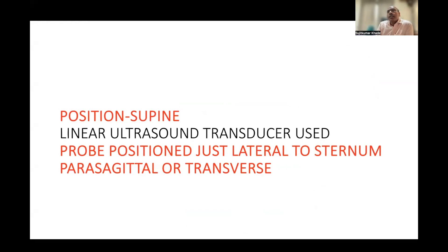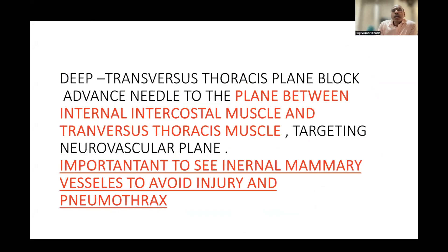Patient position is supine. A linear ultrasound transducer is used, positioned just lateral to the sternum, either in parasagittal or transverse orientation. For the transverse thoracic plane block — which is a deep block — the needle is advanced into the plane between the internal intercostal muscle and the transverse thoracic muscle, targeting the neurovascular plane. Internal mammary vessels must be identified to avoid pneumothorax by piercing the pleura.